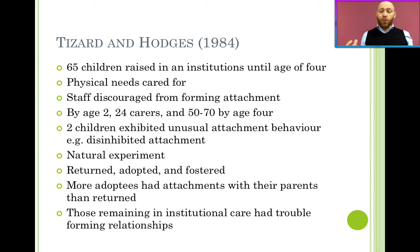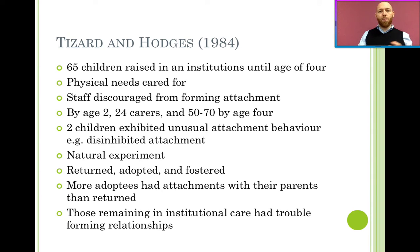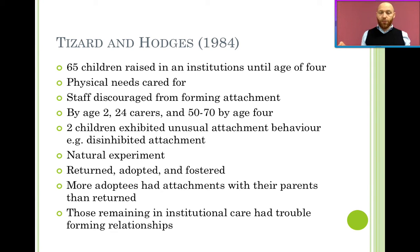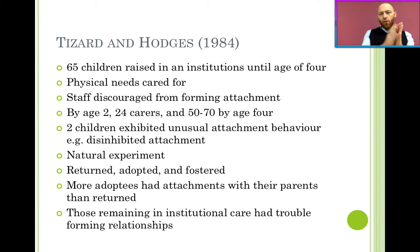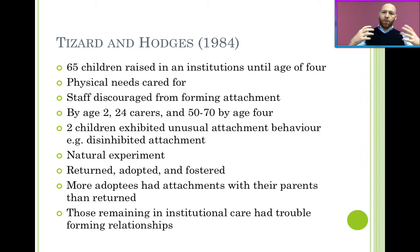By age 2, children started to exhibit disinhibited attachment — this unusual attachment behaviour. This was a natural experiment. Participants — in this case the children — were not randomly allocated to different conditions; this was a real institution. What Tizard and Hodges did was analyse the consequences later on. The reason it was a natural experiment was because three independent variables arose out of this study.